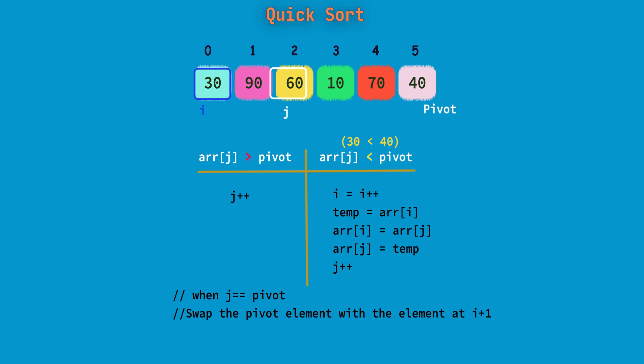So it will point to 60. Now 60 is greater than 40 and we will increment j again. Now j will point to 10. Since again 10 is less than 40, we will increment i. And then we will swap i and j, that is 90 and 10.